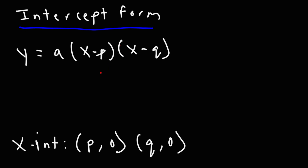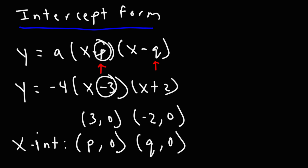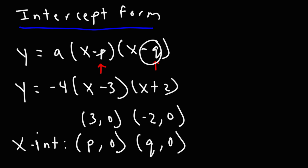For instance, if we have y = −4(x − 3)(x + 2), the first x-intercept is (3, 0) — we change negative three to positive three. The second is (−2, 0) — we change positive two to negative two. If you set −p = −3, then p = 3. If you set −q = 2, then q = −2.